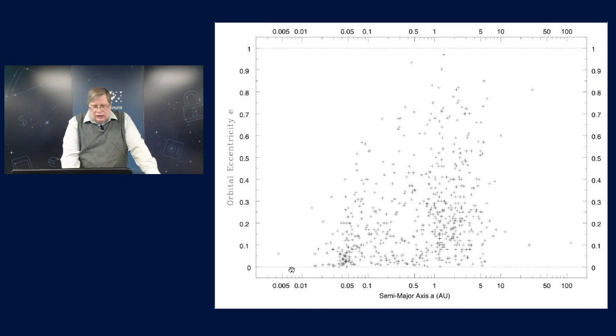Here, I've plotted the 627 extrasolar planets now known with known semi-major axes and detectable eccentricities. There are more that nominally have zero eccentricity, but those are generally not well determined. As you can see, these eccentricities range very widely from practically zero all the way up to nearly unity, which would be the limit for a bound orbit.